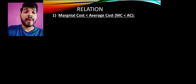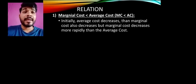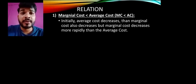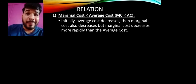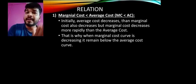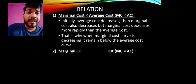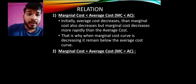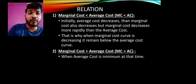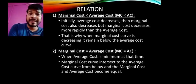Now let's look at the three key relations. First: MC is less than AC. Initially, as output increases, both average cost and marginal cost decrease, but marginal cost decreases more rapidly than average cost. Because of this, the MC curve stays below the AC curve during this phase. Second: MC equals AC. When average cost is at its minimum — at the 4th unit of production — the marginal cost equals the average cost. This is where MC intersects AC from below.